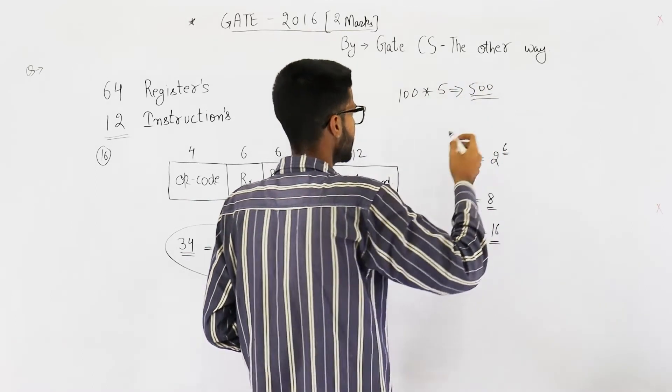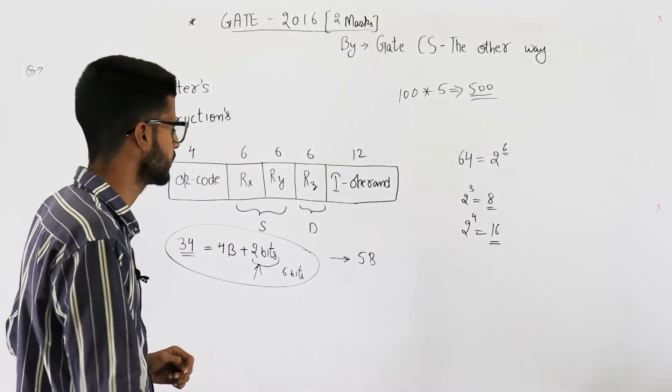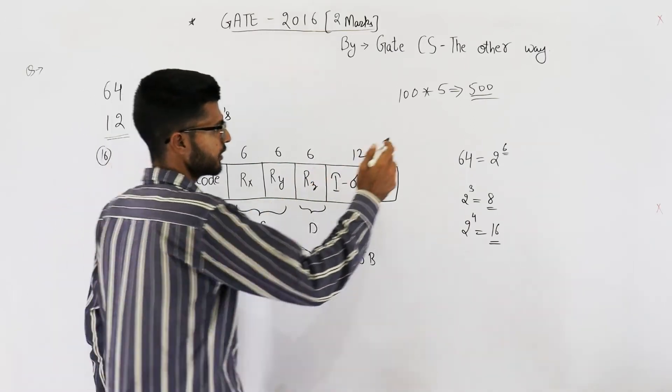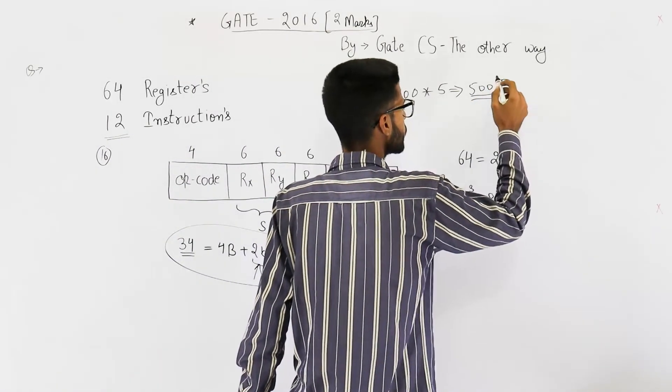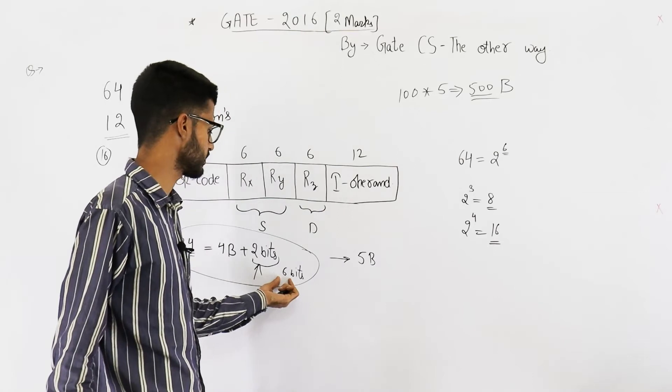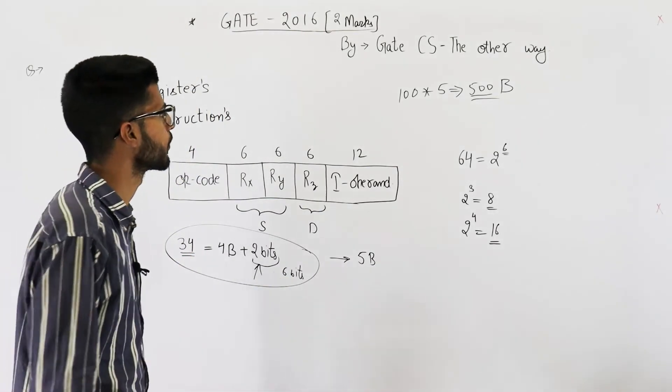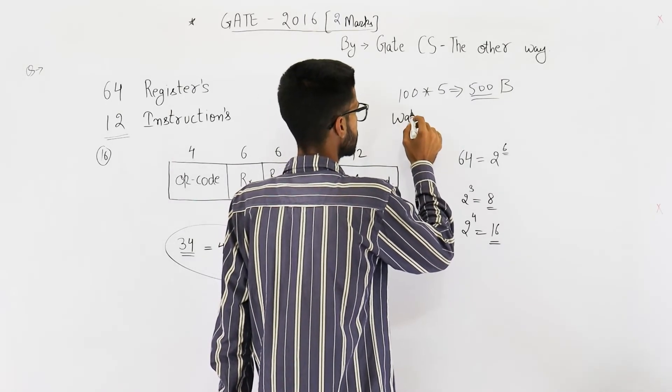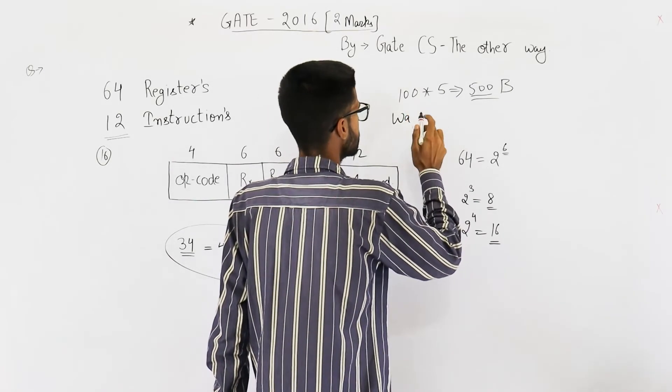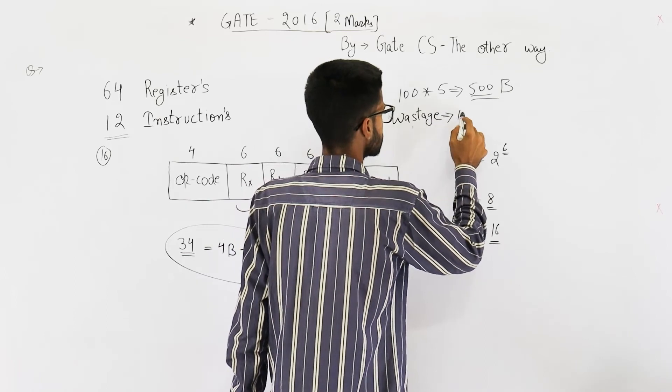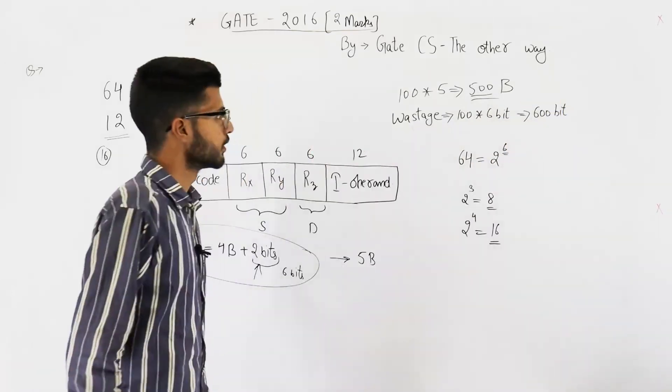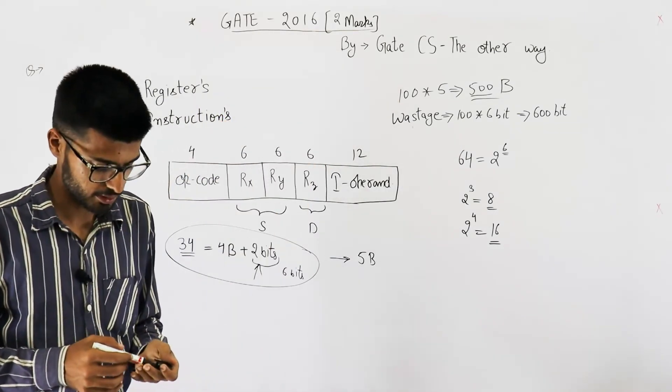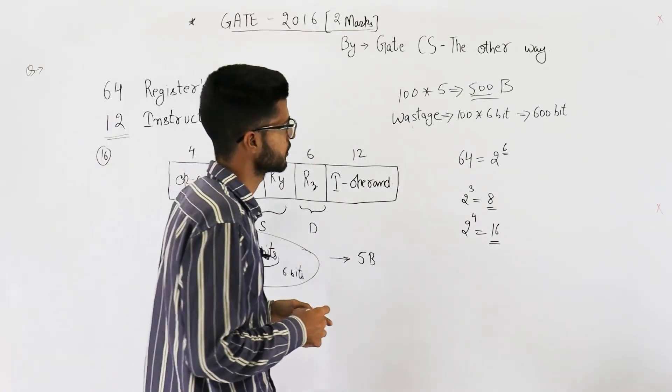Let's also calculate the wastage. Even though they are not asking. Anyways, 6 bits are wasted. The unit here is bytes. 6 bits are wasted. For 1 instruction, that means, in total, 600 bits are going to be wasted. So, this is the amount of memory required, out of which 600 bits are wasted. The answer to this question is 500.